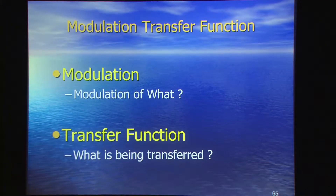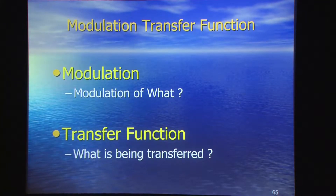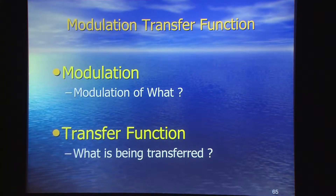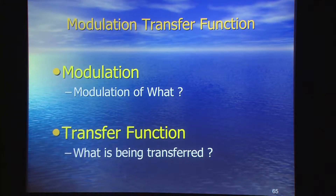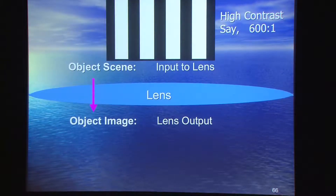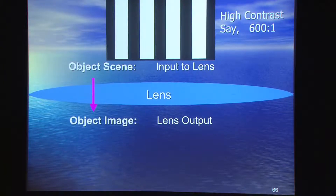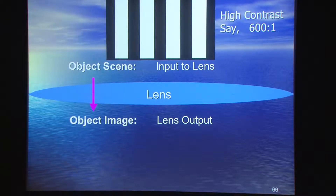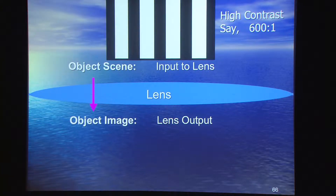Those three words beg two questions: what are we modulating, and what are we transferring? That's what I'll simply explain. And I'll start with a lens — this is very important, very important, when you come to consider resolution and sharpness.